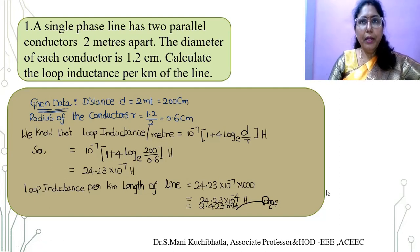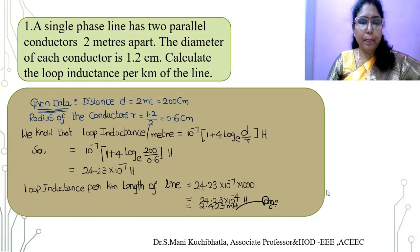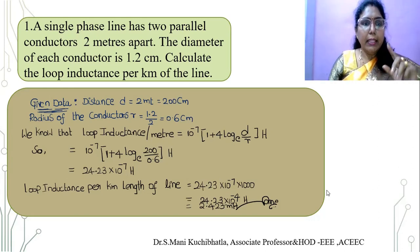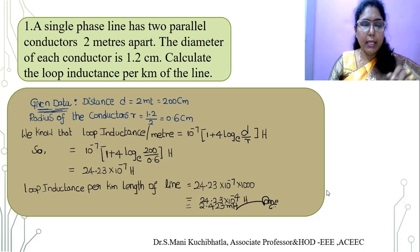In this video we are going to solve problems based on calculation of loop inductances. A single phase line has two parallel conductors two meters apart. The diameter of each conductor is 1.2 centimeters. Calculate the loop inductance per kilometer of the line.